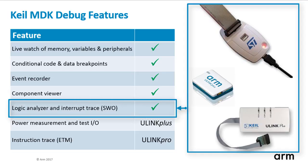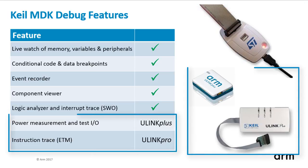With serial wire output trace, short SWO, you get variable changes over time with the logic analyzer as well as time and statistics of your interrupt execution. The high performance U-Link debug adapters are allowed to analyze power consumption or to use instruction trace for getting code coverage and execution profiling.